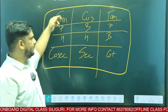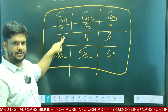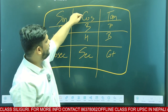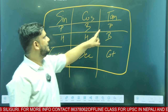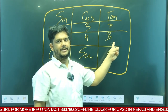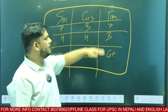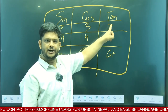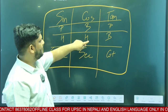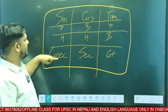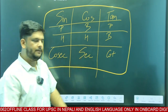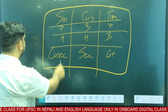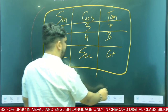Sin formula: perpendicular by hypotenuse. Cos formula: base by hypotenuse. Tan formula: perpendicular by base. Cot formula: base by perpendicular. Sec formula: hypotenuse by base. Cosec formula: hypotenuse by perpendicular. Understood? Now I have to select and question based on this.